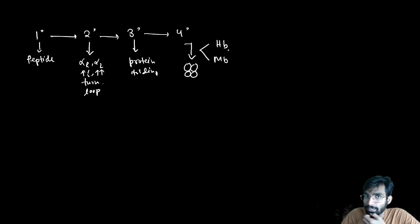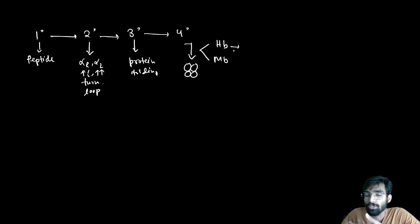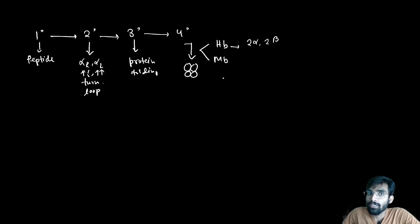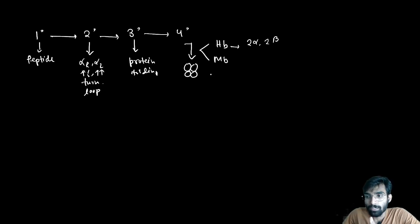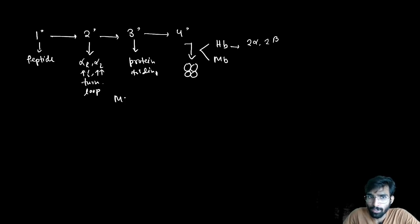Hemoglobin has four subunits — two alpha and two beta — not four identical subunits. Both hemoglobin and myoglobin are transport proteins that carry oxygen. Hemoglobin carries oxygen to different parts of the body, while myoglobin mainly serves muscle tissue.